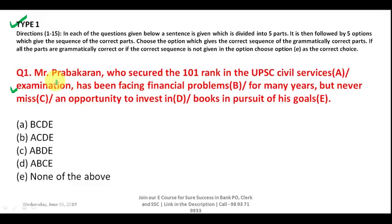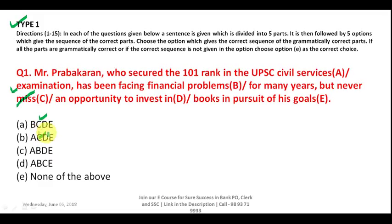Now let me go through question 1: 'Mr. Prabhakaran, who secured the 101 rank in the UPSC civil services examination, has been facing financial problems for many years.' In this question we are talking about the past tense because the sentence says he has been facing problems — in the past and continuing till now. That is why the verb used in present tense is wrong. In place of 'miss' you have to say 'missed' because you are talking about past tense. So part C is wrong and your answer is the combination that doesn't have C.